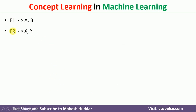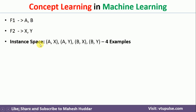Let us say we have only two features, f1 and f2. The possible values for f1 are a and b; the possible values for f2 are x and y. The set of possible instances or concepts is: ax, ay, bx, and by. These are the four possible instances of the concept space.